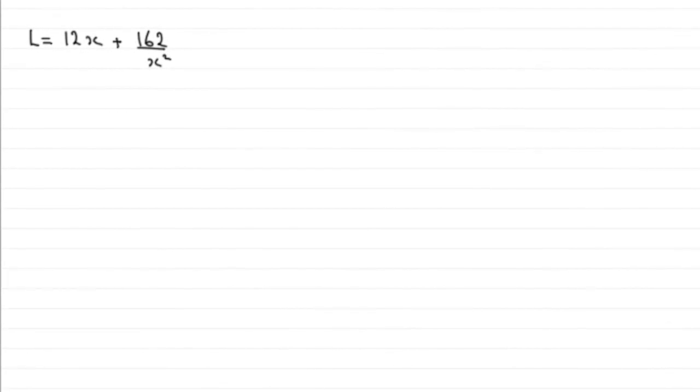I found that the total length of all the sides is equal to 12x plus 162 over x squared. We're told that we've got to use calculus to find the minimum value of L, calculus being differentiation.